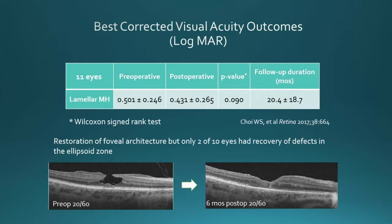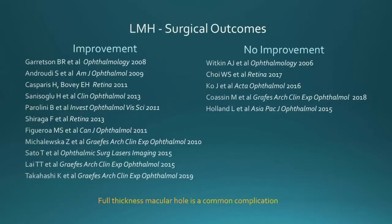Preoperatively, our level of vision was about 20/60 when we started. However, we noted in all cases there was restoration of the foveal architecture, but only two eyes out of the ten that had ellipsoid defect layers showed some improvement. On the lowest panel, you can see the restoration of the normal anatomy; however, the visual acuity remains poor.